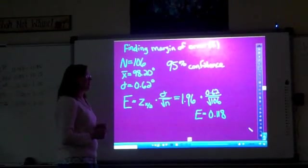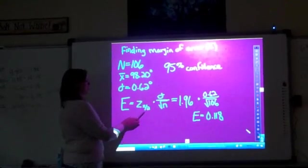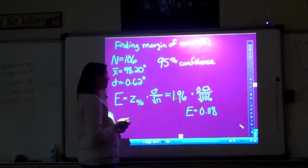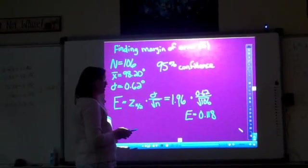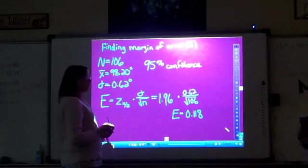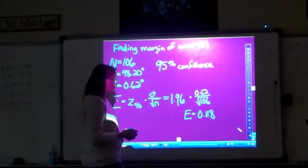In order to find the 95% confidence, we're going to plug our numbers into this equation. We know that our z is 1.96 and then we're going to take that times the standard deviation over the square root of n, and we come up with a margin of error of 0.118.